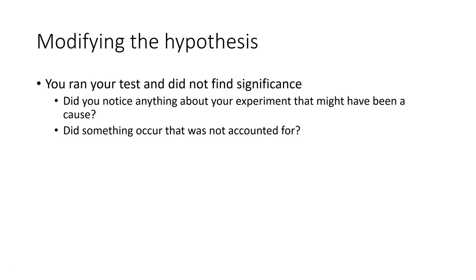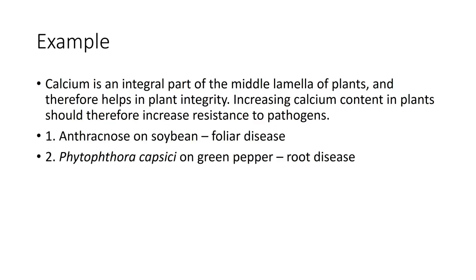Did something occur that was not accounted for? You ran it, checked your variables, and something occurred. Could that have been within what you did? Here's an example from experiments I ran early in my career. Calcium is an integral part of the middle lamella of plants and therefore helps maintain plant integrity. Increasing calcium content in plants should therefore increase resistance to pathogens. These are proven, factual concepts.